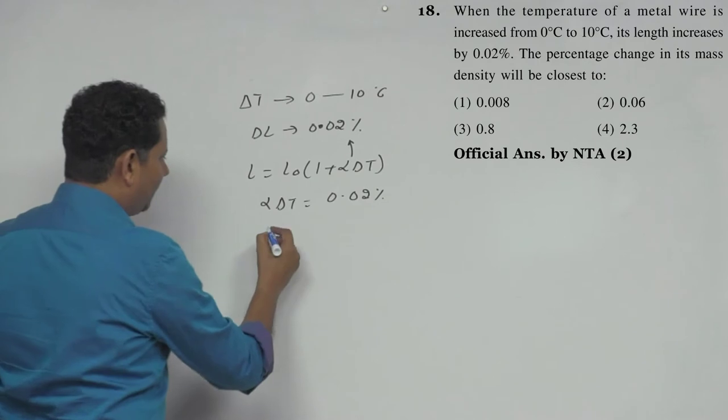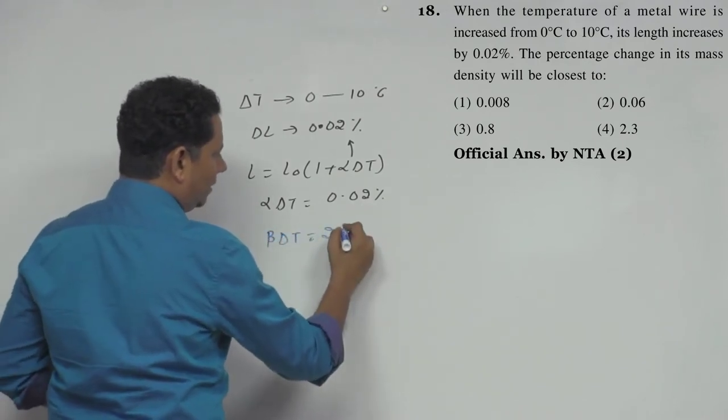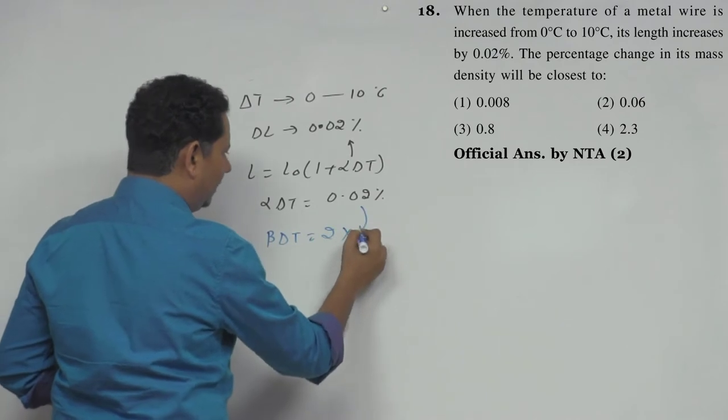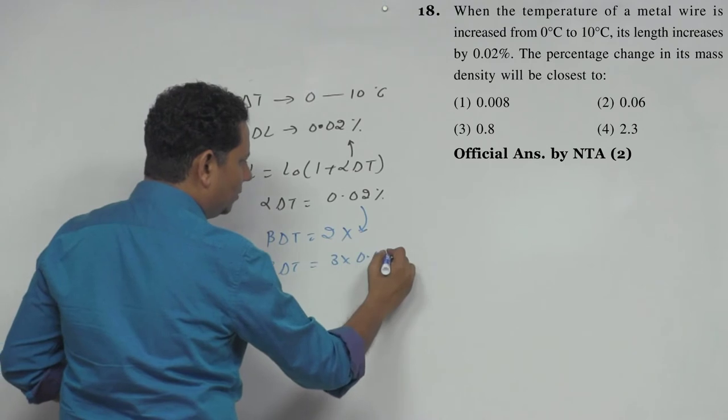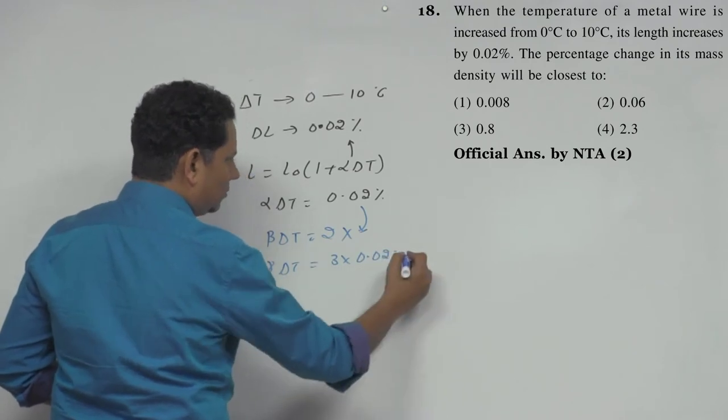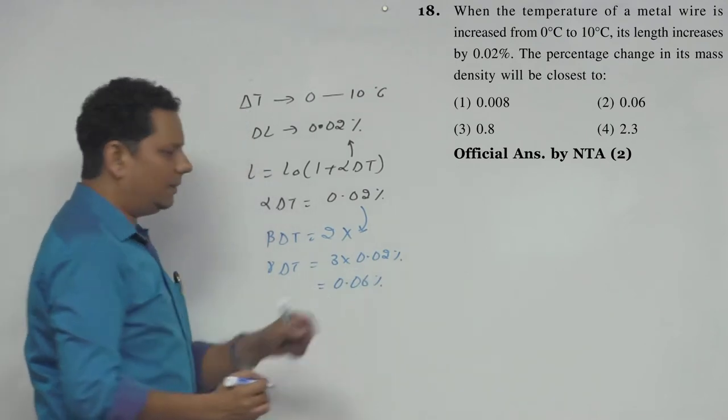If we consider this alpha delta T, we can relate it to beta delta T, which is twice this value, and gamma delta T, which will be equal to 3 times 0.02%, so that will be equal to 0.06%. So you have gamma delta T here.